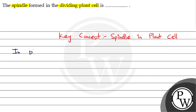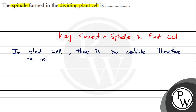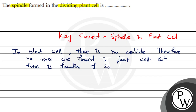In plant cells, there is no centriole. Therefore, no asters are formed. In plant cells, but there is formation of spindle, without centrosome.